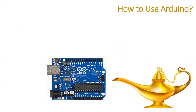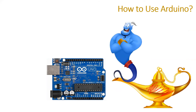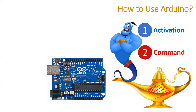So how to use Arduino? Let us understand how we use the magic lamp in our stories. In order to invoke the genie inside the magic lamp, first we need to rub it. Once you rub the magic lamp, the genie would come out — this is what we mean by activation. The second step is we need to command this genie so that it can fulfill our wish. These are the two important things: activation and commanding.